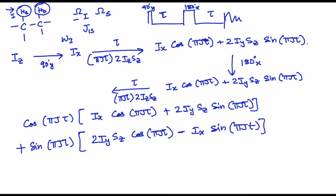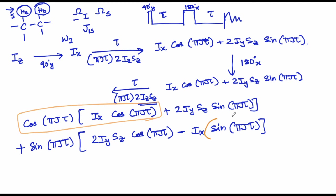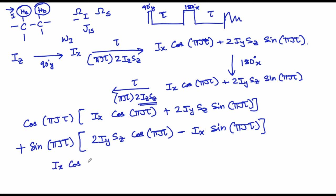If you pay close attention, what you are able to see is that you have an Ix cos² term with a −Ix sin² term. Basically, you have Ix(cos²(πJτ) − sin²(πJτ)), which is nothing but Ix cos(2πJτ).